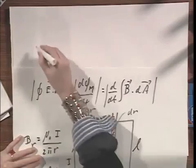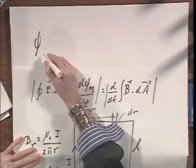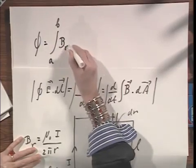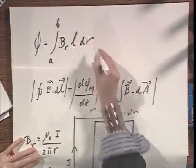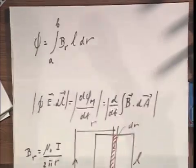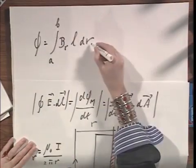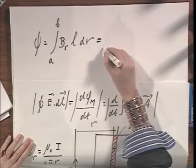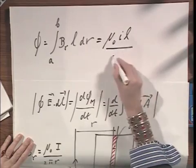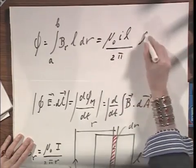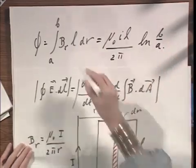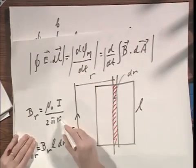And so, if I do an integral of the magnetic flux, then I have to do an integral all the way from a to b of that magnetic field times L dr. And what do I find? μ₀ times I times L divided by 2π times the logarithm of b over a. Because remember, Bᵣ is inversely proportional to r.